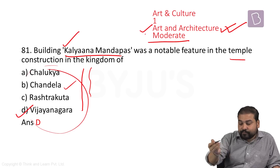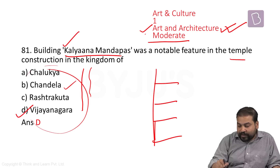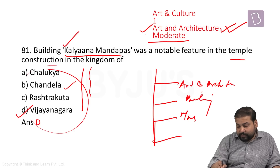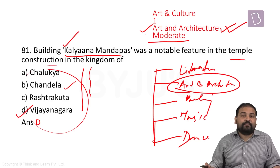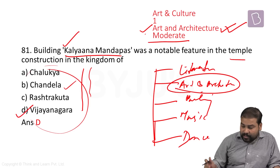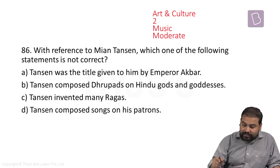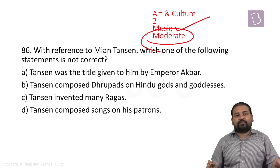We always ask people that when it comes to art and architecture, you should always do five prominent chapters: architecture, painting, music, dance, and some proper literature. One question has come from art and architecture, and another question has come from music — again I'm mentioning it as a moderate question.